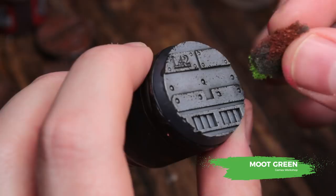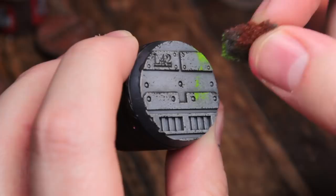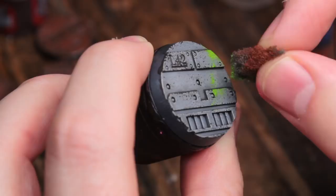Now we're going to paint some toxic sludge. So we're going to take some Moot Green and using our sponge, we're just going to create a random splodgy pattern. As if some toxic goop has spilled out of a barrel or a pipe and has just kind of spattered across the floor.